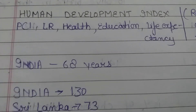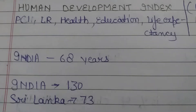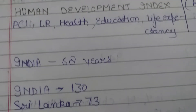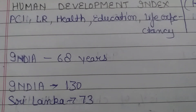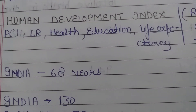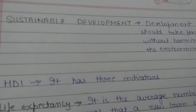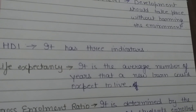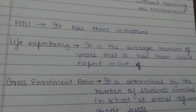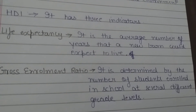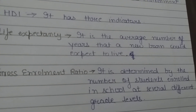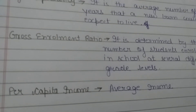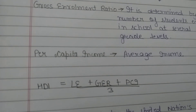Sri Lanka's life expectancy is 73 years, which is better than India's despite being a much smaller country. HDI has three indicators: first, life expectancy — the average number of years a newborn could expect to live; second, gross enrollment ratio — the number of students enrolled in school at several different grade levels, meaning how many children are enrolled in different classes; and third, per capita income, which is average income.